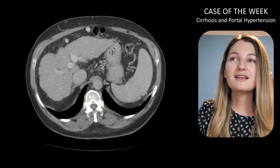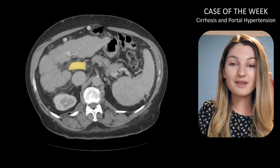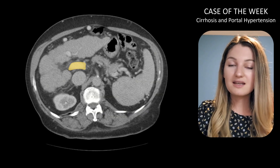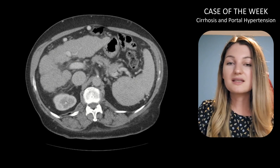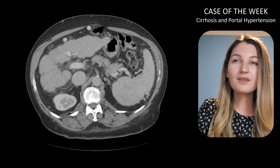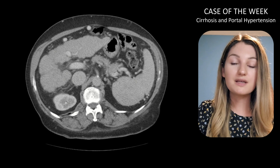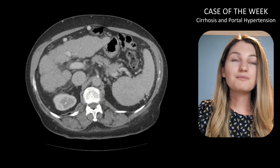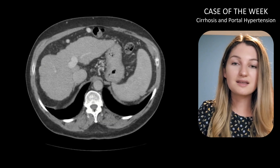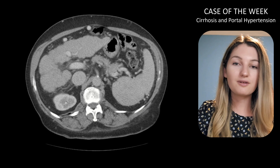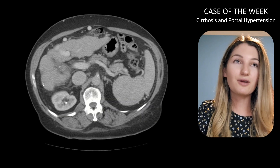Next let's take a look at our portal veins. Our main portal vein is looking a little bit thick, and it measures 16 millimeters in diameter — the upper limit of normal is 15 millimeters — so this is consistent with portal hypertension. While looking at our portal vein, let's make sure we don't have any evidence of thrombus. We can have bland thrombus or tumor thrombus, so if you see any thrombus, check for abnormal enhancement that could indicate tumor thrombus.